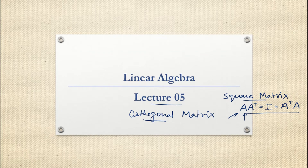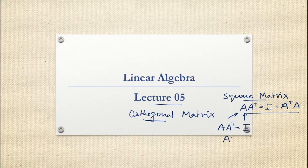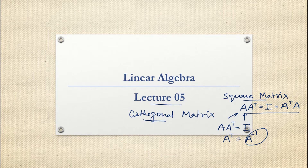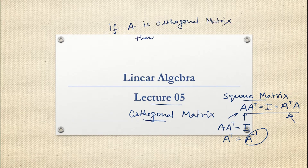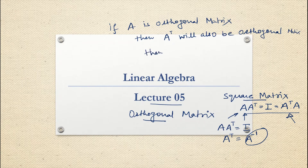I hope you know what AT (A transpose) is — we have covered that, and we have covered the identity matrix. If AAT = I, that means A transpose is nothing but A inverse — we covered the concept of A inverse last class. So we can write that AT = A⁻¹. If A is an orthogonal matrix, then AT (the transpose of A) will also be an orthogonal matrix. Even A inverse will also be an orthogonal matrix — the inverse as well as the transpose of an orthogonal matrix are all orthogonal in nature.